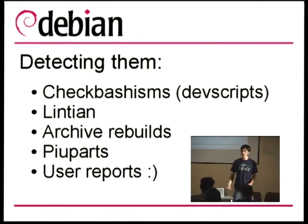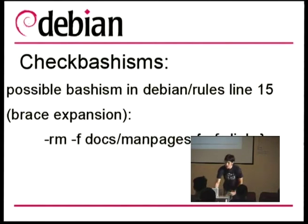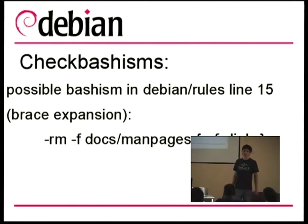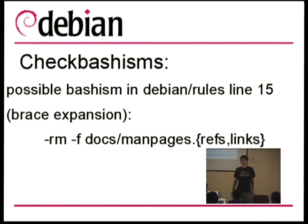There are other ways to detect them by making the change, rebuilding the archive, and testing the rebuilt packages. If they didn't fail before and now they fail, there's something wrong. We also have the option of users reporting bashisms we didn't detect. The checkbashisms output is shown here applied to a Debian rules file of a package. It supports bin/sh scripts and even makefiles, though makefile support is not as complete as pure script mode, but we are still improving it.